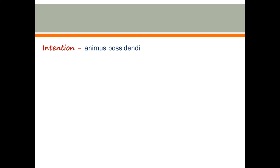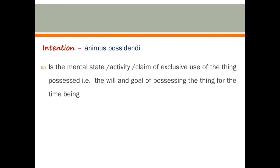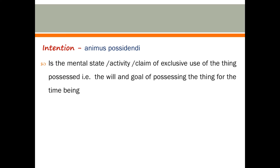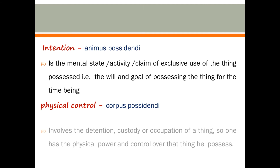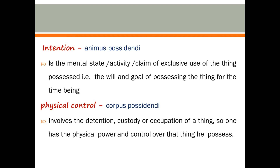Let us look at intention as the first element. It is the mental state, activity, or claim of exclusive use of a thing that is possessed — that is the will and the goal of possessing the thing for the time being. The other element is physical control: it involves the detention, custody, or occupation of a thing, so one has the physical power and control over that thing they possess.